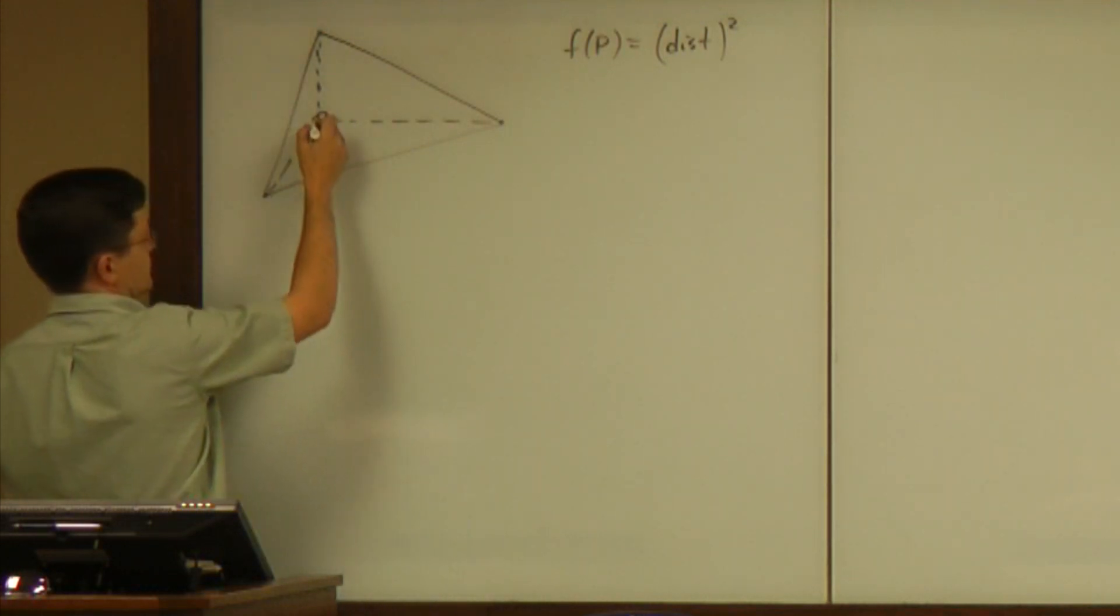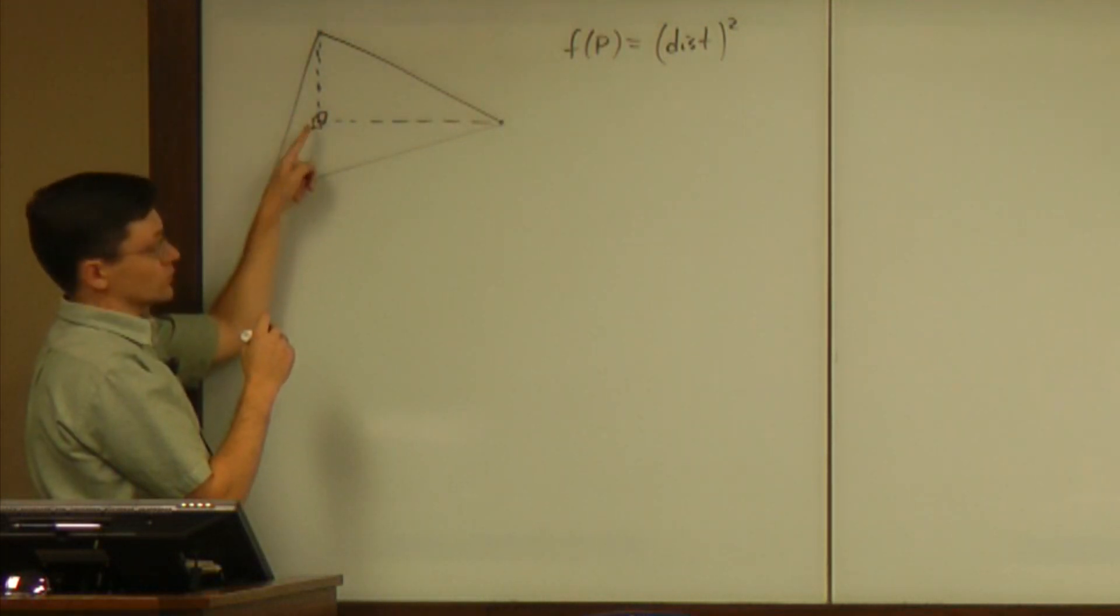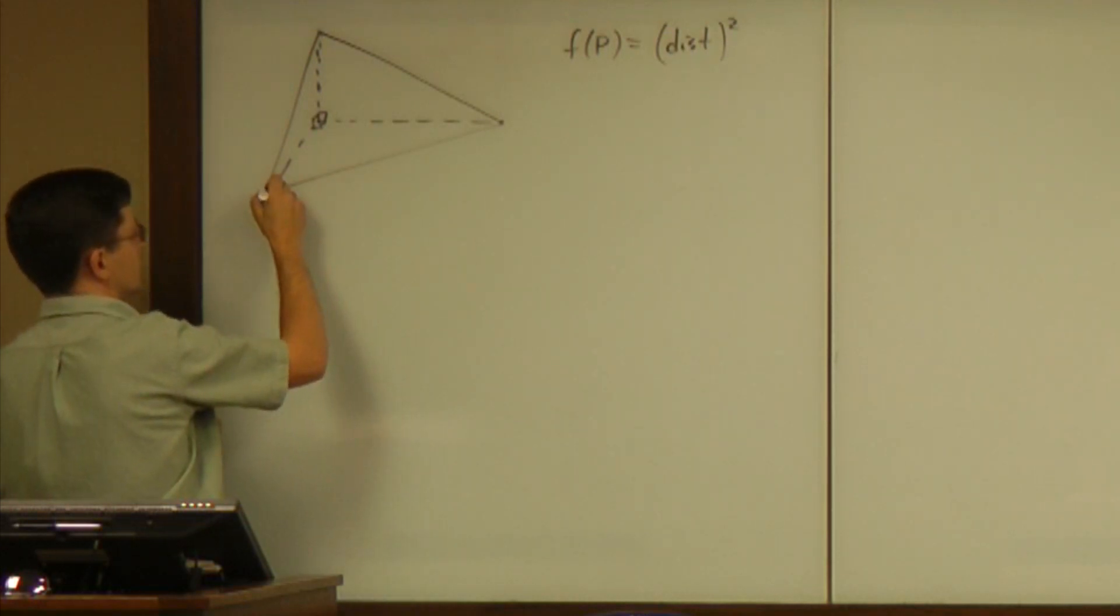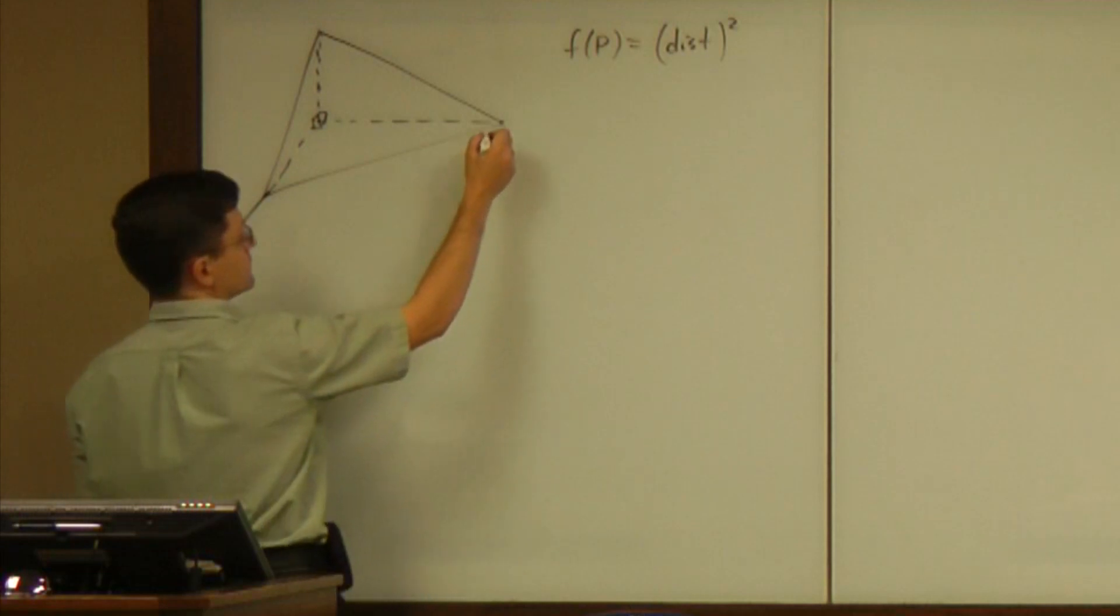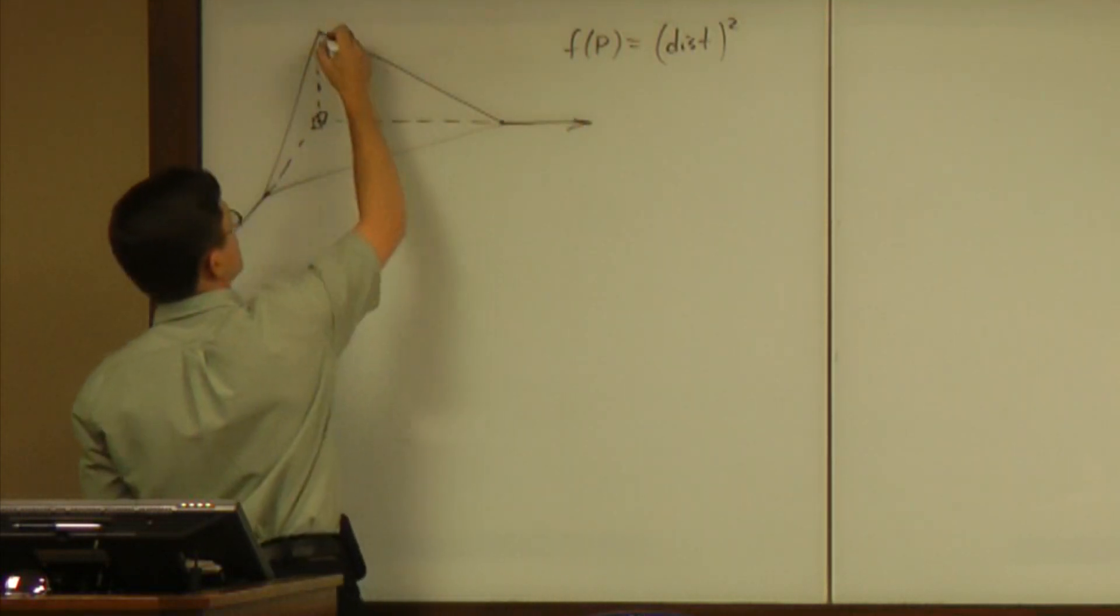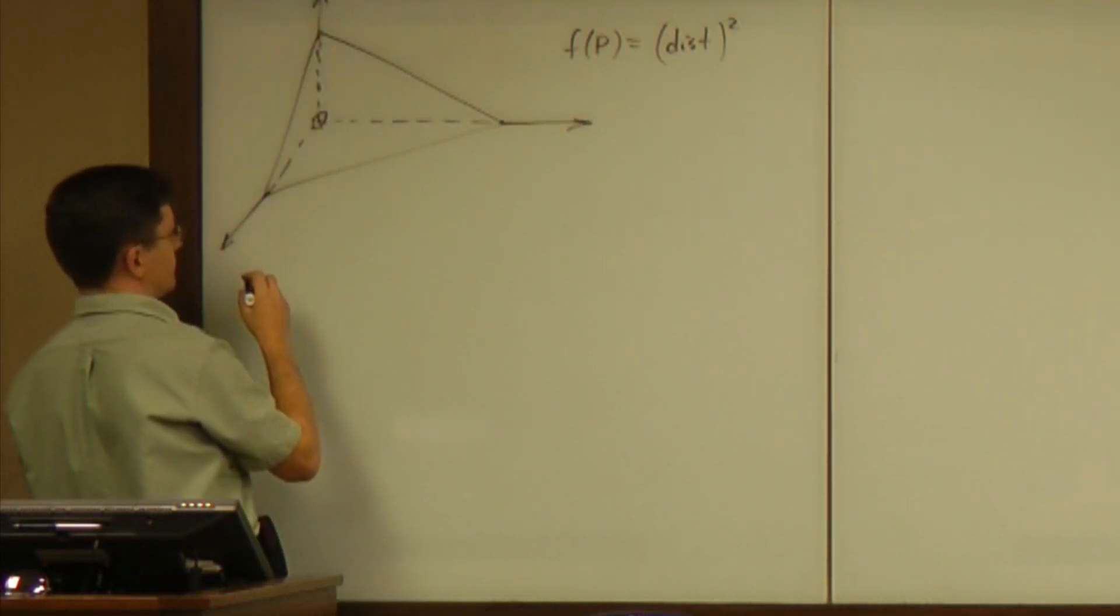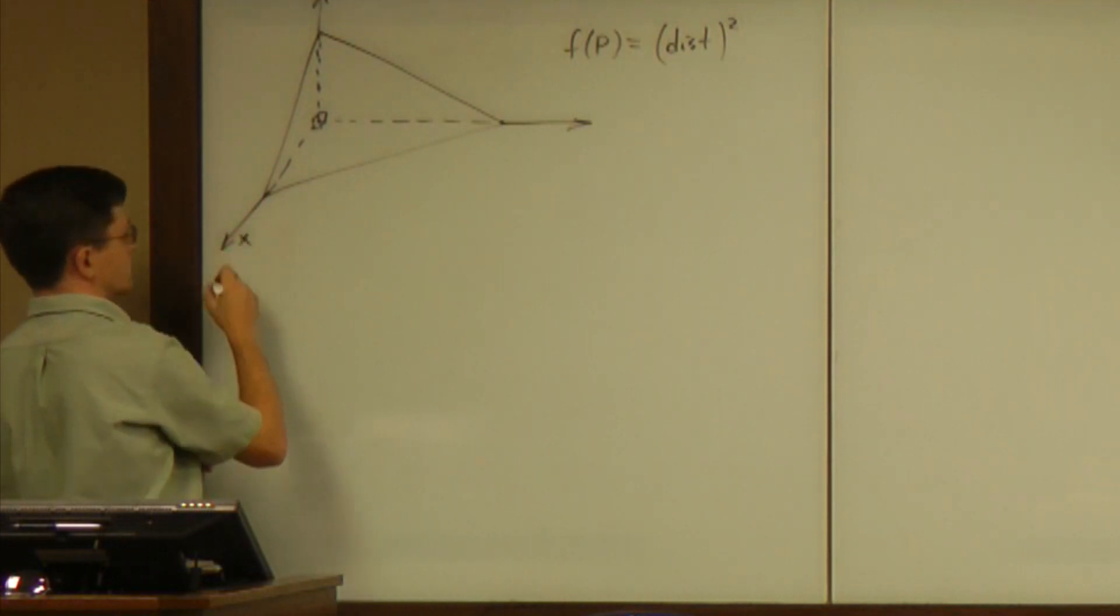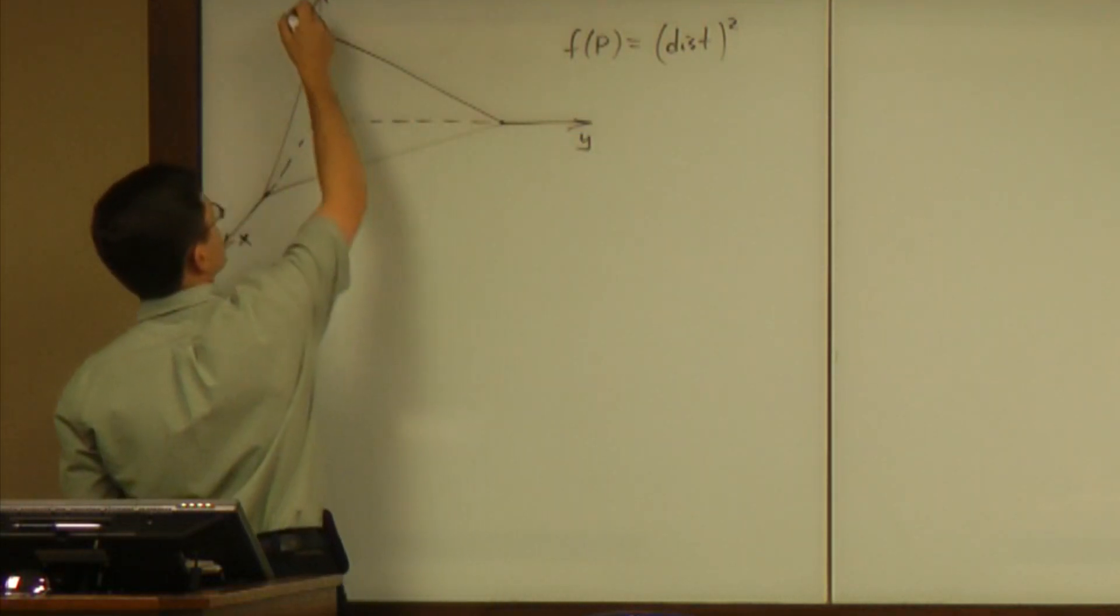So, that suggests naturally that this vertex is chosen as the origin of coordinate system. So, the three edges from the vertex will be chosen as coordinate axis. So, X, Y, and Z.